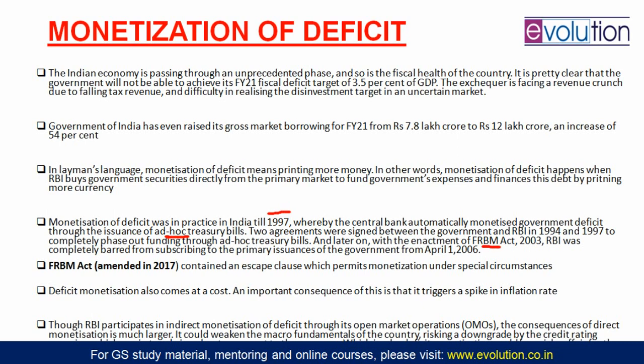The FRBM Act — Fiscal Responsibility and Budget Management Act 2003 — also said that the RBI will be completely barred from subscribing to the primary issuance of government securities from April 1, 2006, effectively ending direct monetization. The FRBM Act was amended in 2017 and now has an escape clause that allows the government to take extraordinary measures, including monetization of fiscal deficit, under special circumstances.